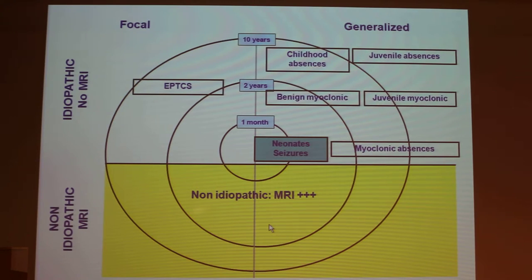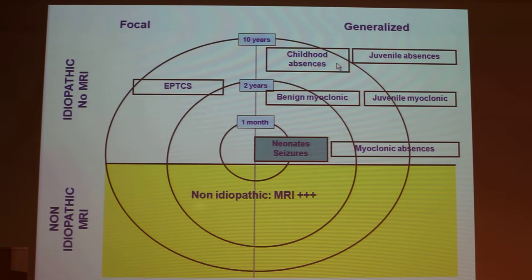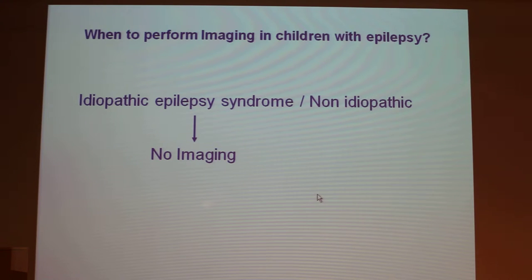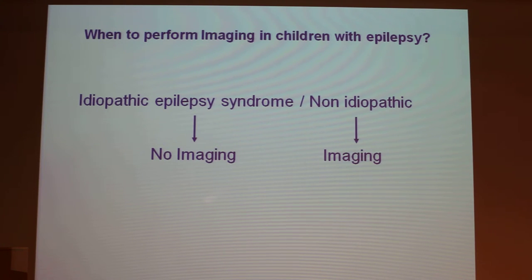Here it is easy: you perform MRI in all non-idiopathic epilepsies. It's very important to know what is child absence epilepsy and benign myoclonic epilepsy — you do not perform MRI here. But you do perform MRI in non-idiopathic epilepsies. So, when to perform: idiopathic — no imaging; non-idiopathic — imaging.